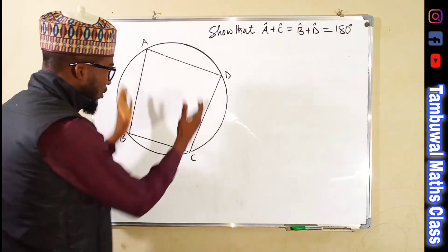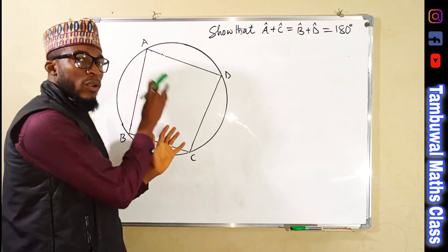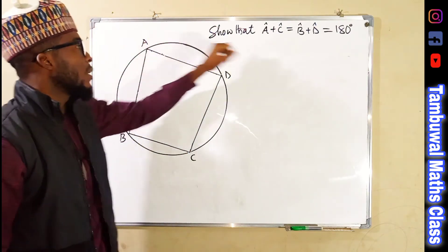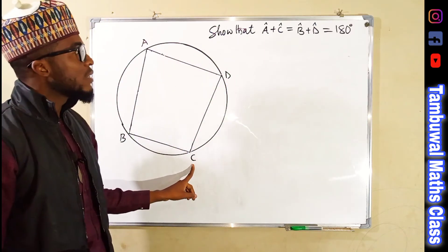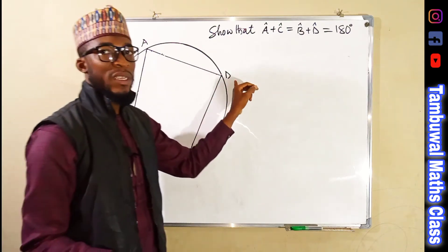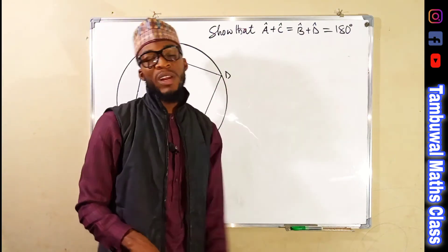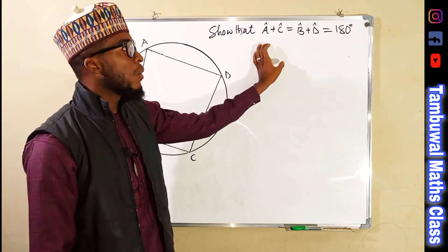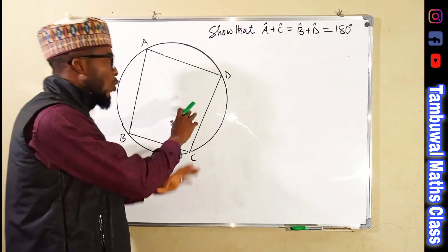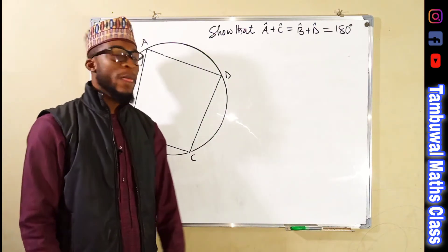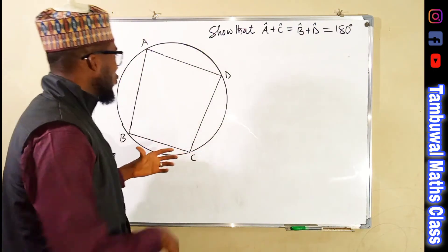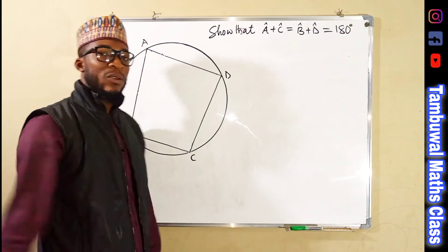So this is a cyclic quadrilateral. It is enclosed in a circle. We want to show that angle A plus angle C, which is opposite to angle A, equals 180 degrees — the same as angle B plus angle D equals 180 degrees. This condition only holds if the vertices of this quadrilateral all lie on the circumference of the circle. There are a couple of ways to prove this, but I think the best way is to draw diagonal lines in this quadrilateral.